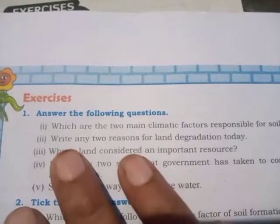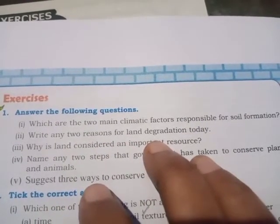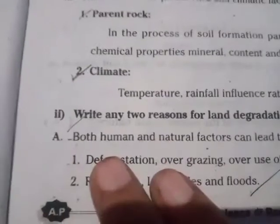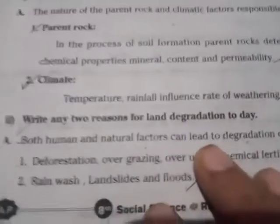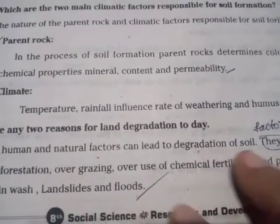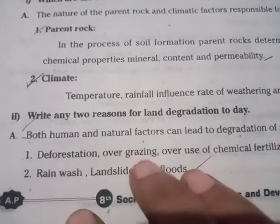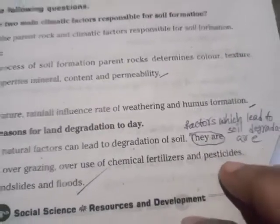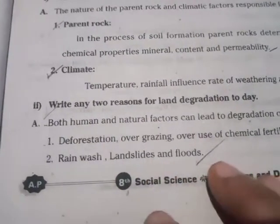Second question: Write any two reasons for land degradation today. Answer: Both human and natural factors can lead to degradation of soil. First point: Deforestation, overgrazing, overuse of chemical fertilizers and pesticides. Second point: Rain wash, landslides and floods.